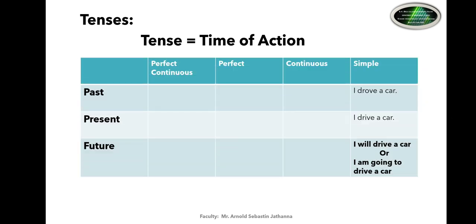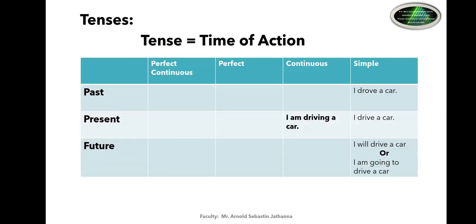The future simple tense will turn up to be 'I will drive a car' or 'I am going to drive a car.' These are the variations of the simple sentence 'I drive a car.' Now let us understand the impact when we change its form from present simple to present continuous. The sentence 'I drive a car' will now become 'I am driving a car,' which refers to being in the present activity of driving - it is continuous and has not ended.